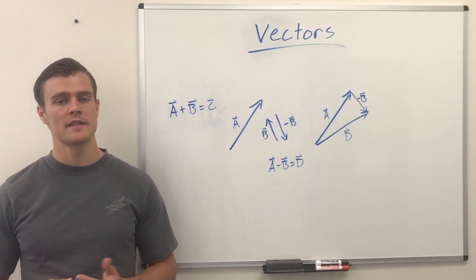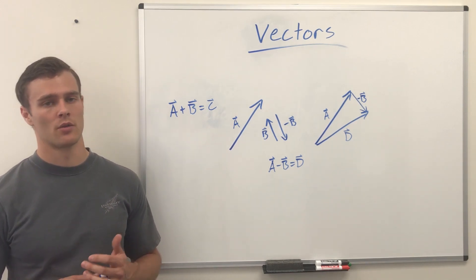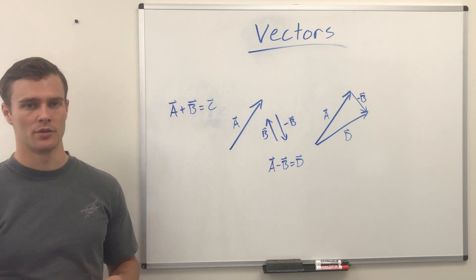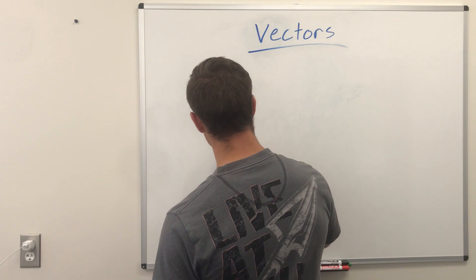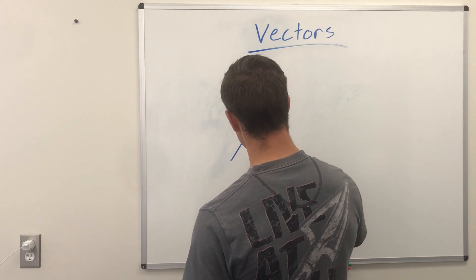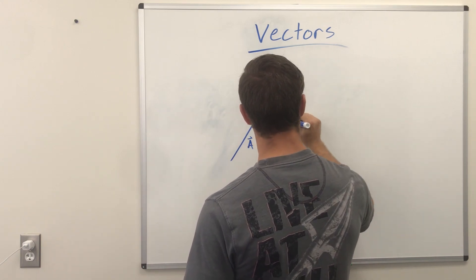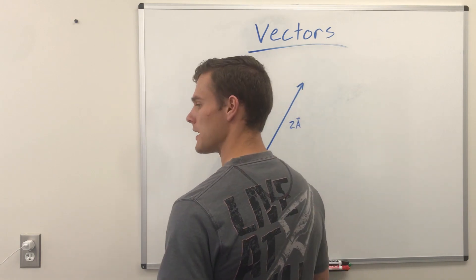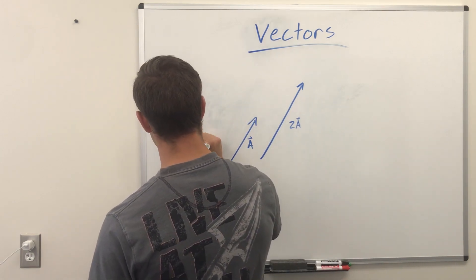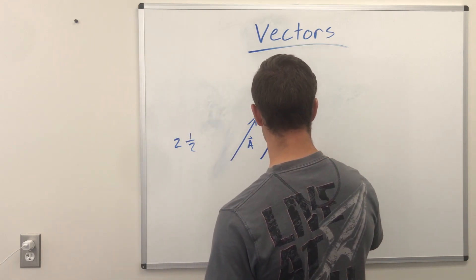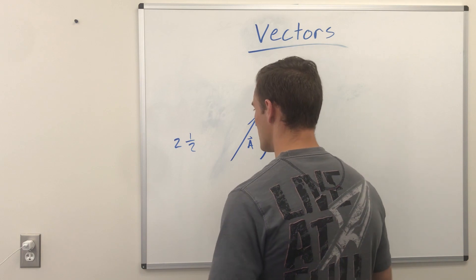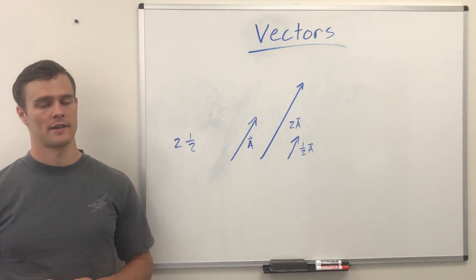Multiplying and dividing is very similar, in that we just make the vector arrow longer or shorter — it basically only affects the magnitude of the arrow. Say we have vector A and we want to multiply it by 2 — we're just going to draw it twice as long, so this will be 2A. Say we want to divide it by 2 — you basically just multiply it by its reciprocal, so the reciprocal of 2 is one half. So for one half A, we'll just have half the length. That's multiplying, dividing, subtracting, and adding vectors.